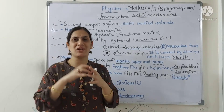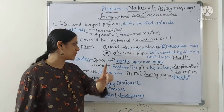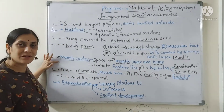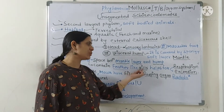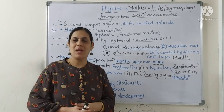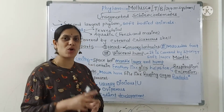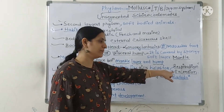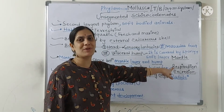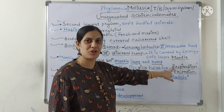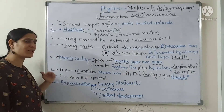There is a little space present between the mantle layer and the hump — that space is called the mantle cavity. This cavity is very important because it contains feather-like specialized gills. We know gills help for gas exchange, but in molluscans these gills help for one additional function — that is excretion also. So the feather-like gills in the mantle cavity help for respiration as well as excretion.